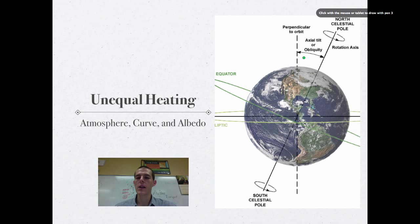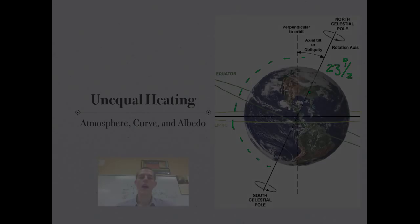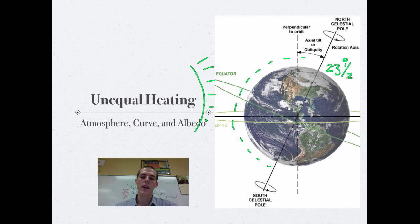There are basically three major reasons that the surface of the earth heats unevenly. I'm going to draw our atmosphere around the earth. The earth is tilted at 23 and a half degrees. Let's say our sun is right here sending rays to the earth all day long. At the equator, you can see that our sun's rays don't have to travel through that much atmosphere.